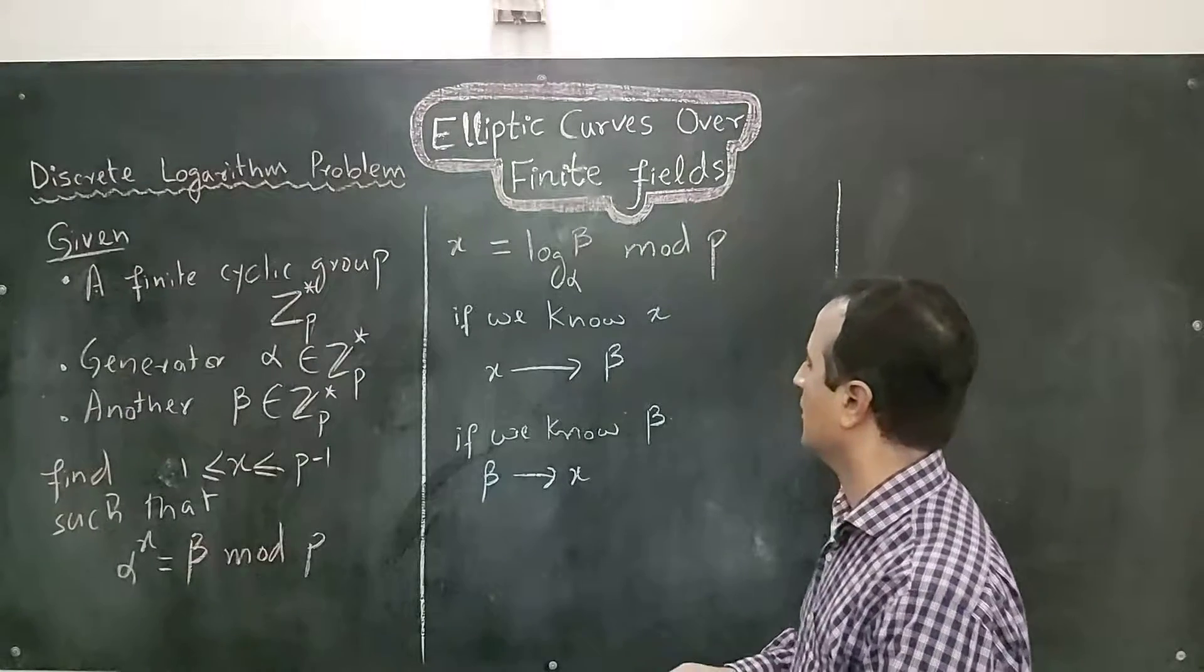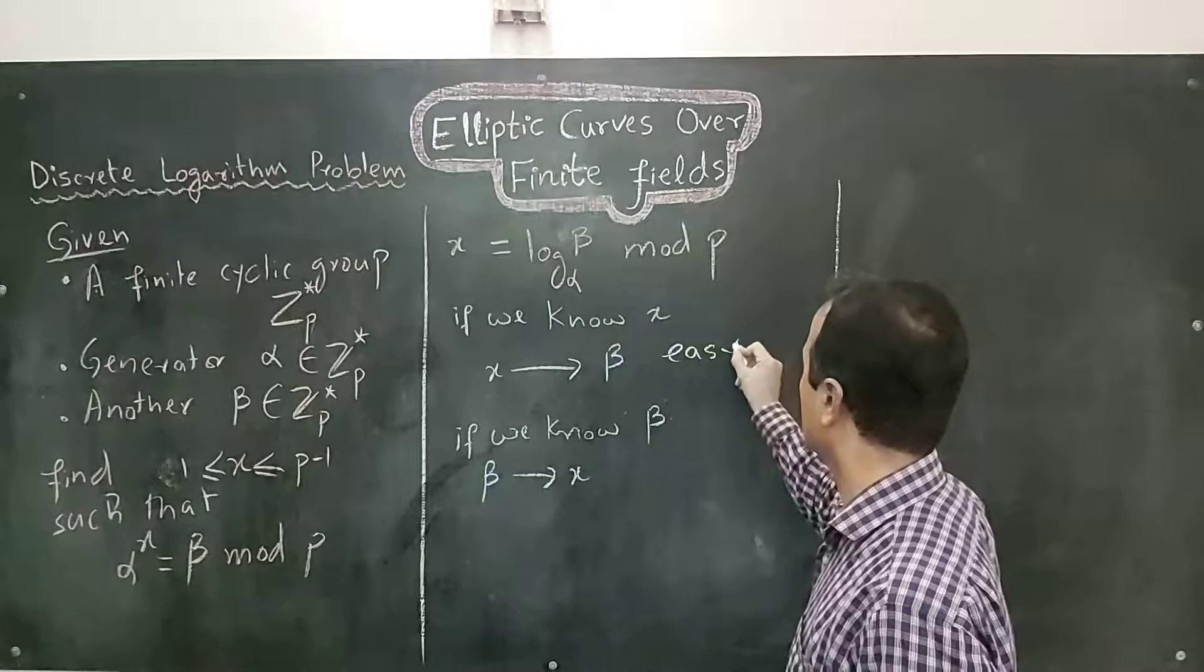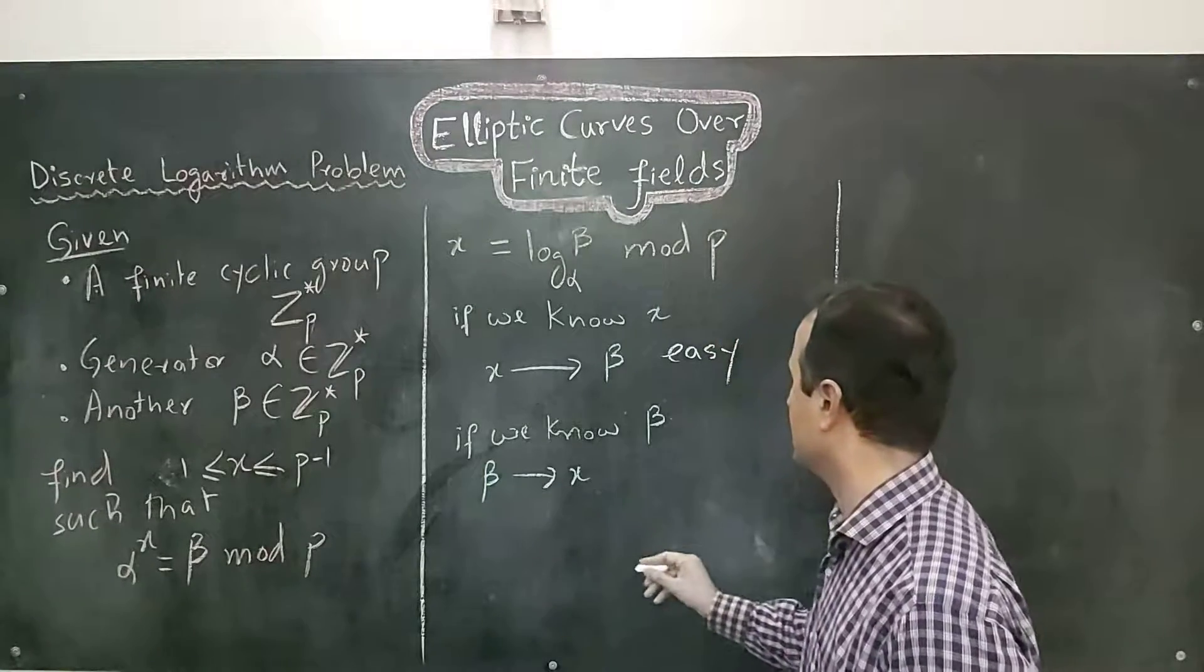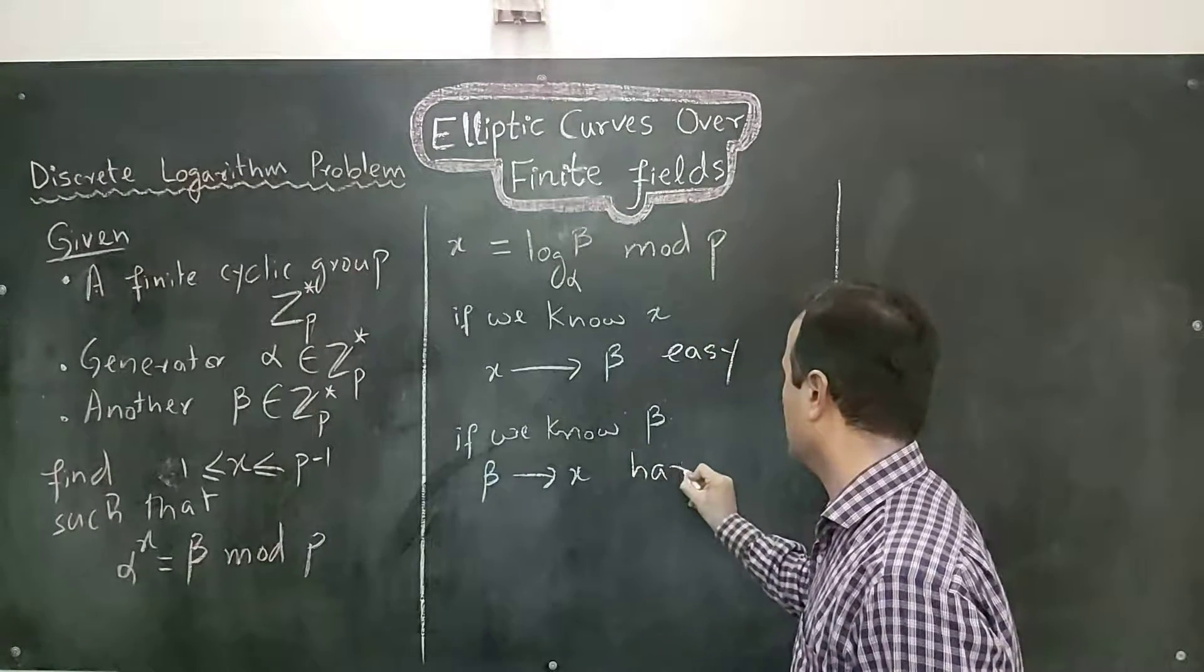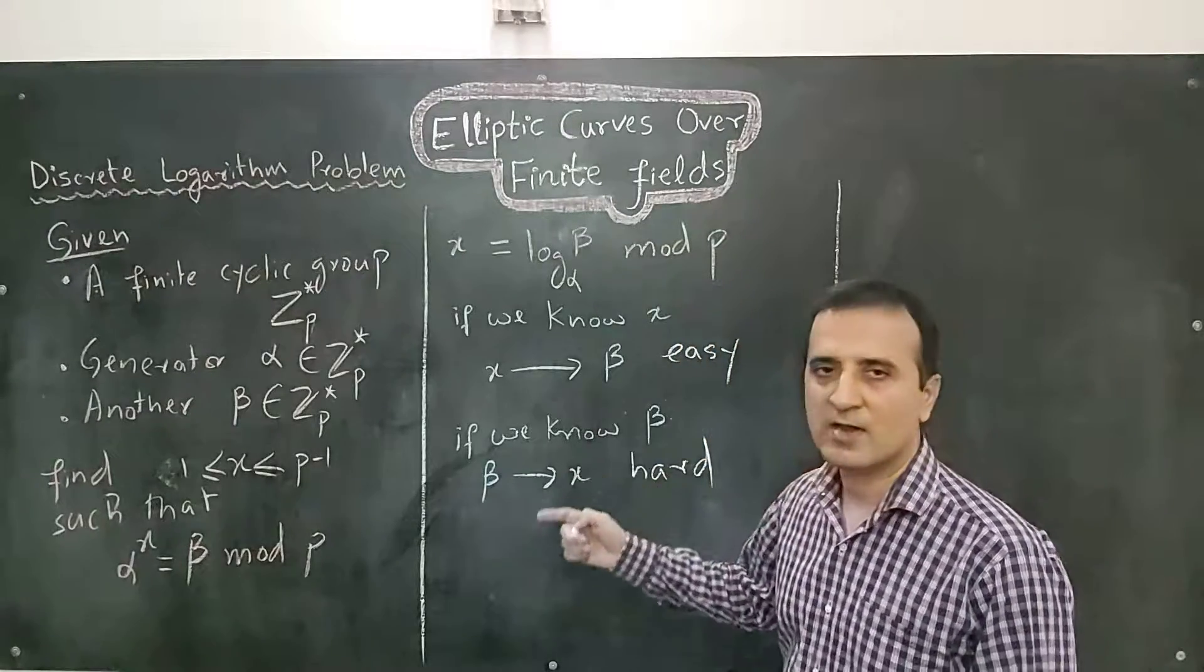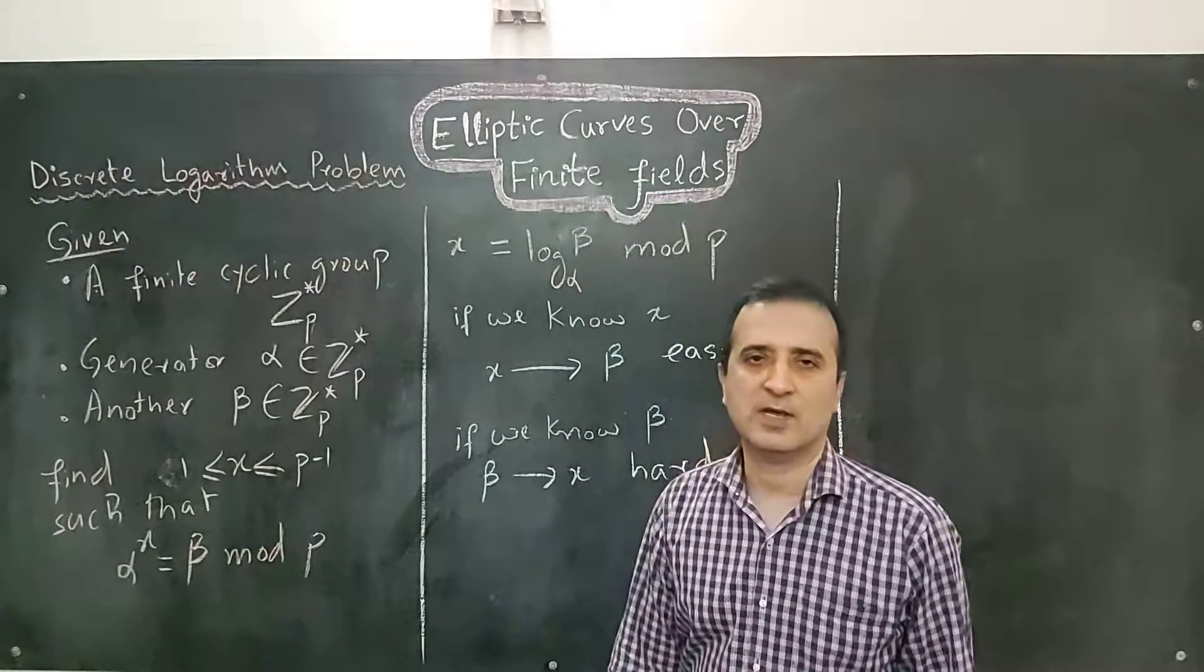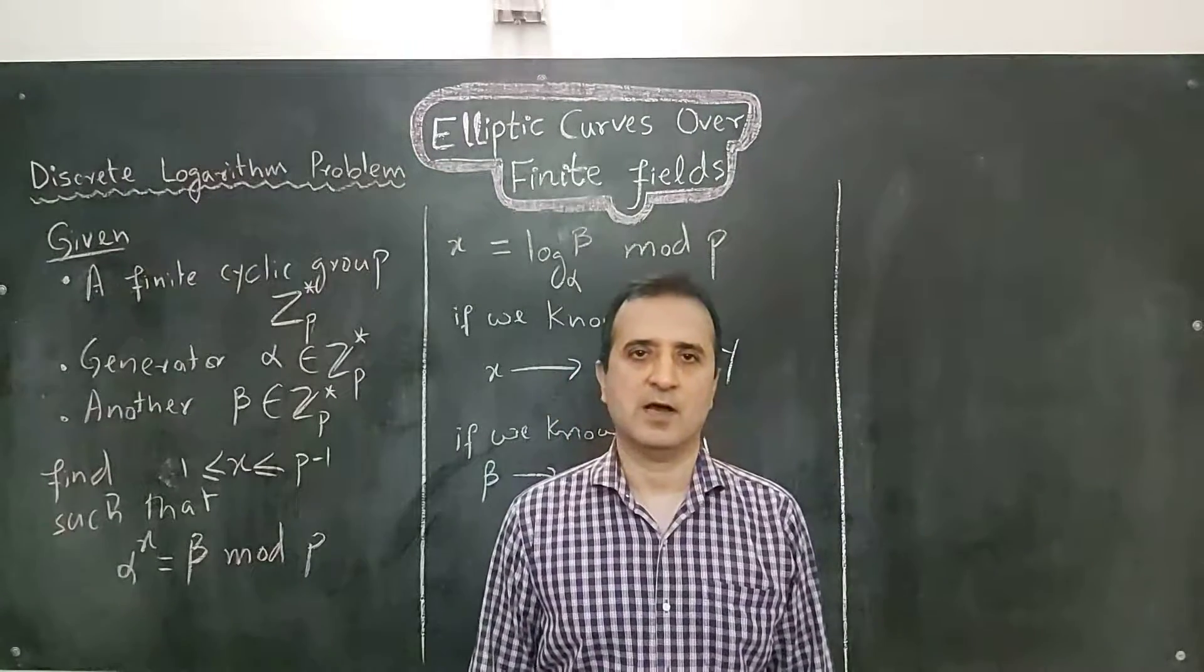So, from x to beta is easy and from beta to x is hard. These kinds of problems are known as one-way problems and they are used in many of the asymmetric cryptography algorithms.